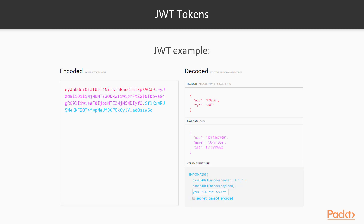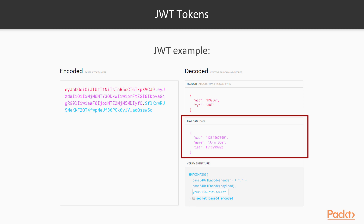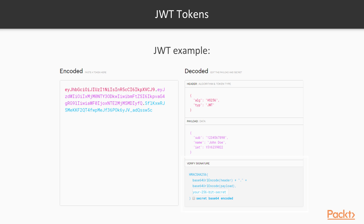Access tokens are short-lived entry tickets to your system. JWT, or JSON Web Tokens, are tokens written in JSON which can be signed and encrypted. They are usually stored either in cookies or in a bearer header of the HTTP request. JWT tokens have three parts: the header, the claims, and the signature. The header contains the definition of the token and encryption parameters. The claims contain all custom information about the user and his permissions. The signature contains the signed hash that can be verified to prevent tampering.